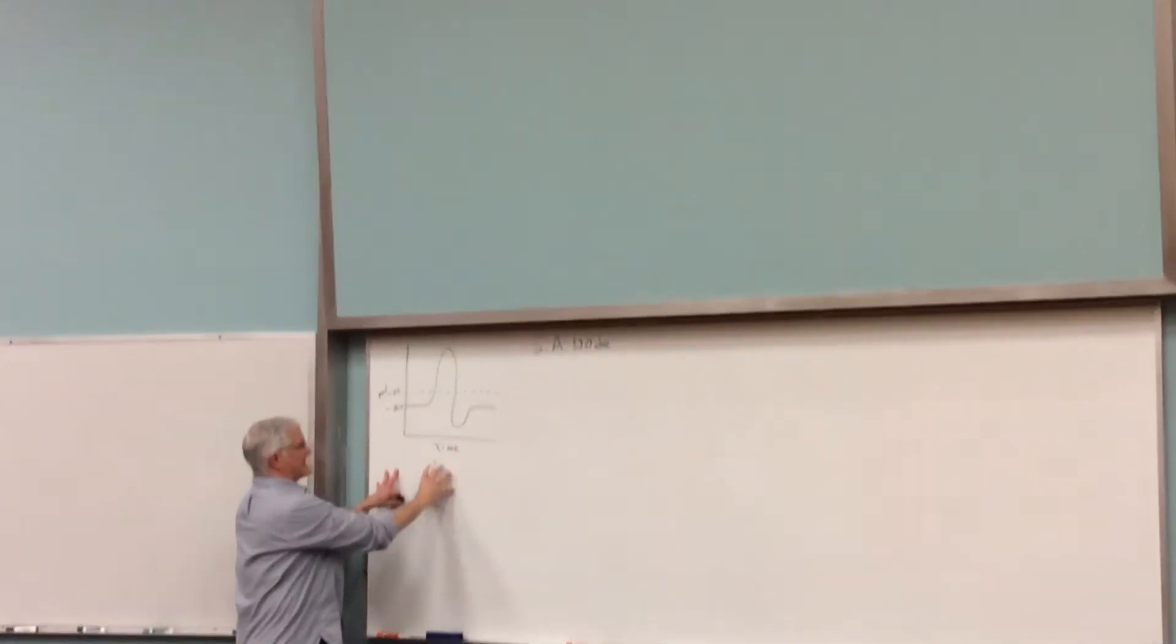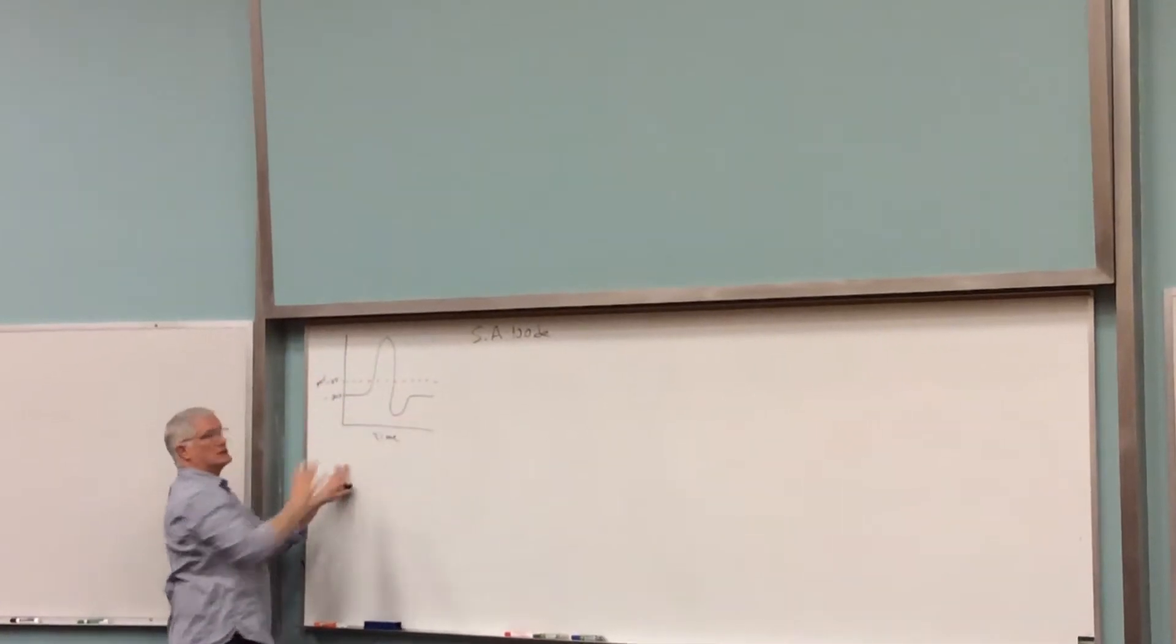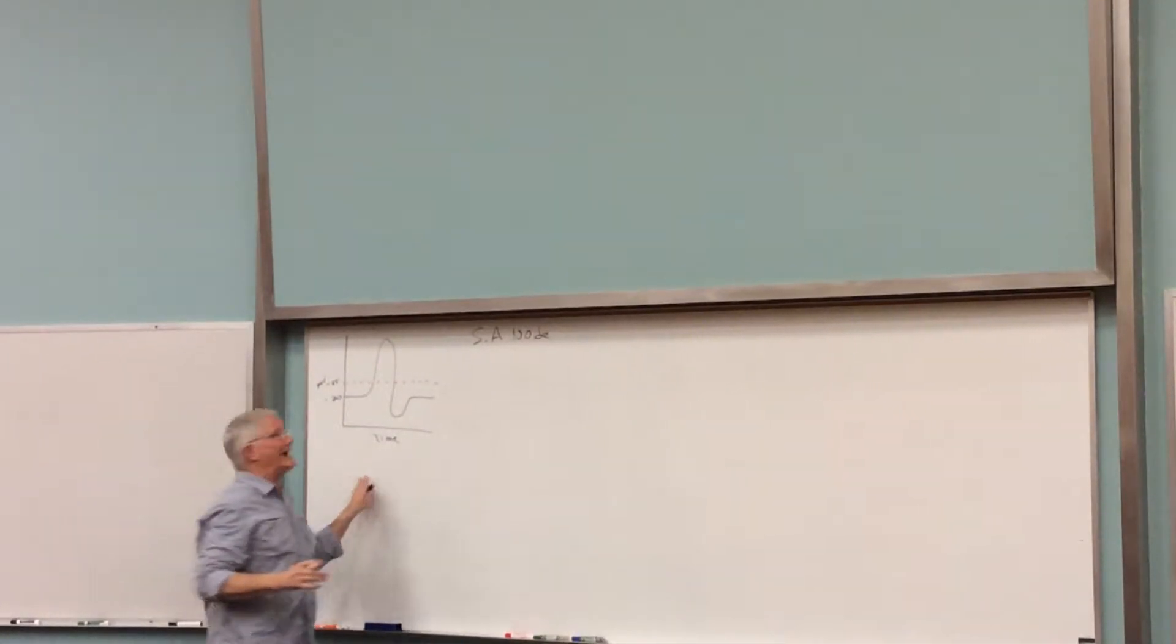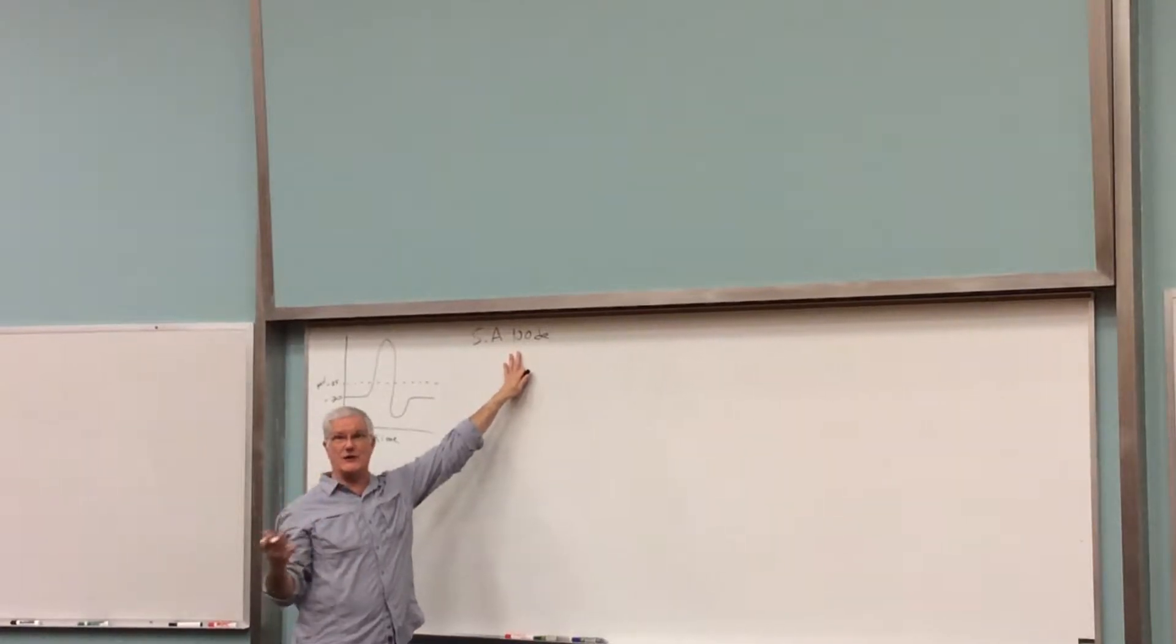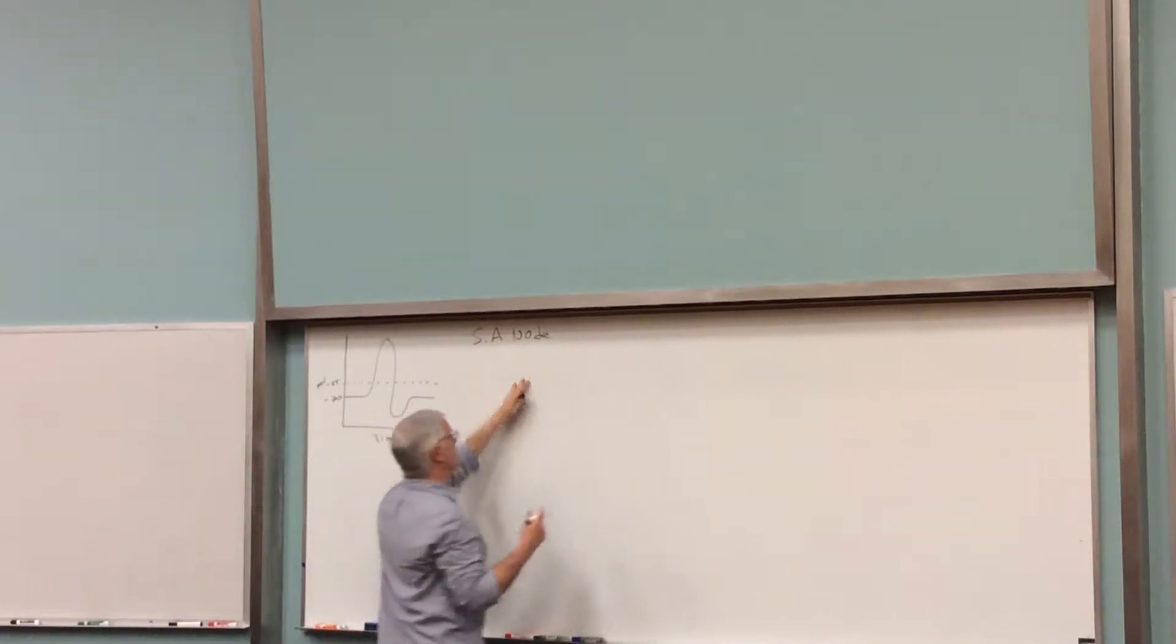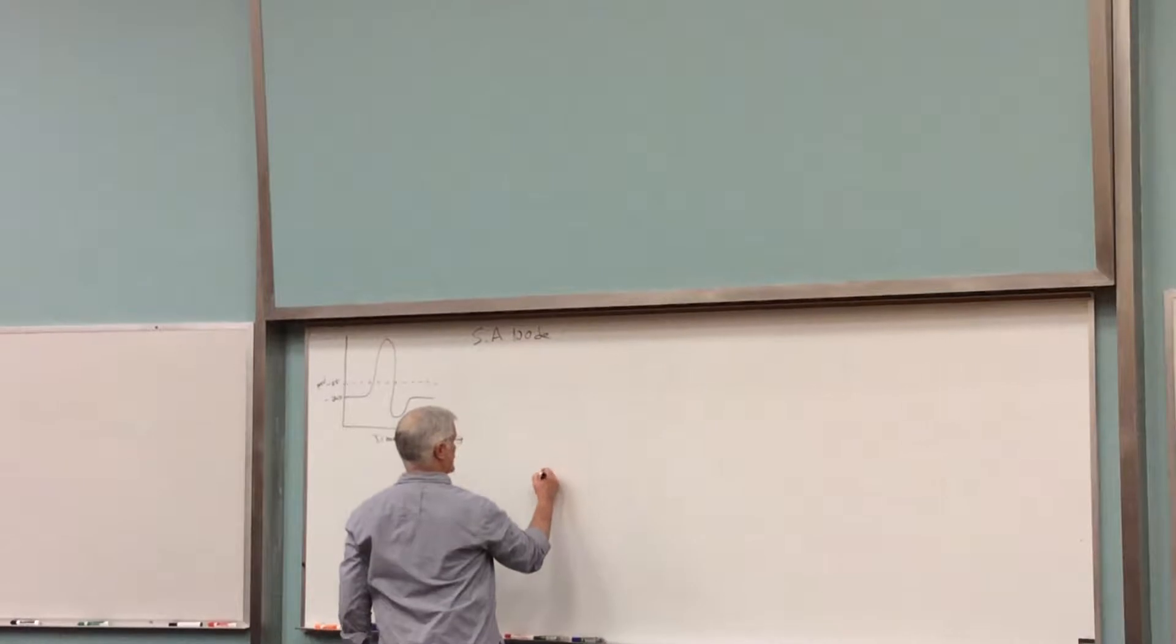This is what a neuron and skeletal muscle's action potential looks like. We're now going to look at what an SA node's action potential looks like. You have a nice slide in your lecture notes that does the same thing.